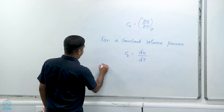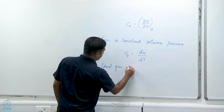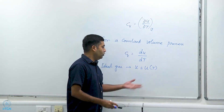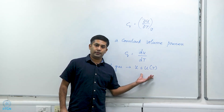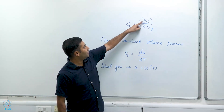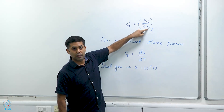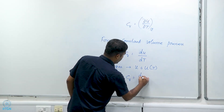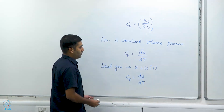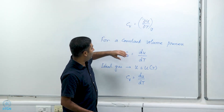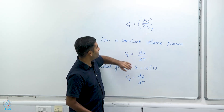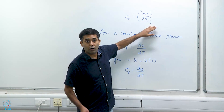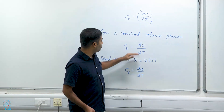Also, for an ideal gas, the internal energy u is only a function of temperature. This is not true for other substances — it is only true for an ideal gas. When that is the case, the partial ∂u/∂T can be written as a simple differential du/dt, since u is just a function of T. So I can write Cv = du/dt. For a constant volume process, the volume is constant anyway, and for an ideal gas u does not depend on v or p, so I can write Cv = du/dt in either case.